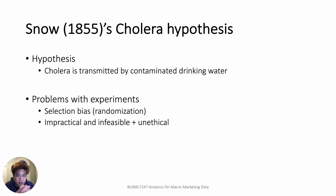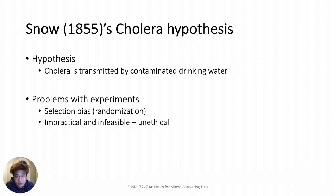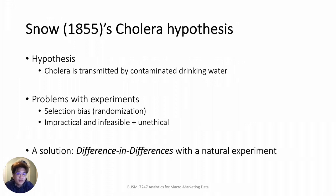But conducting experiments couldn't be a solution because of two problems. First, it was the time before the concept of randomized experiments was developed. Second, it was impractical, infeasible, and more importantly, unethical in the situation of no verified treatments for cholera. Instead, he focused on a natural experiment where he could apply the difference-in-differences method to show that cholera was waterborne.